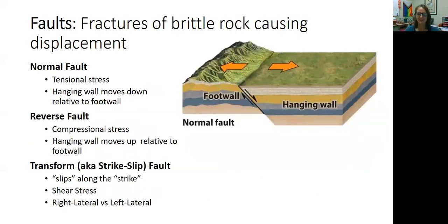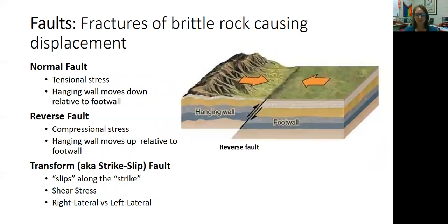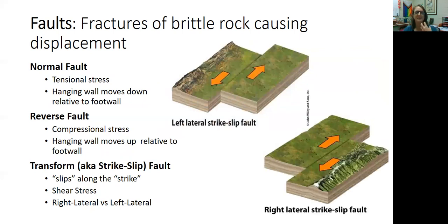This should be a refresher. Normal faults are caused by tensile stress when the hanging wall falls down relative to the footwall. Reverse faults, caused by compressional stress, are formed when the hanging wall moves up relative to the footwall. And transform faults occur when shear stress creates a right-lateral or left-lateral fault — nothing moving up or down, just moving right or left.